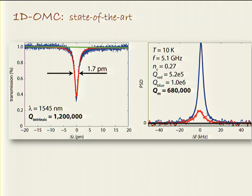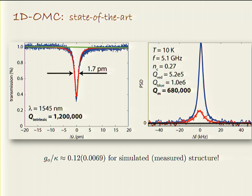The localized optical mode is at around 1.5 micron wavelength and the breathing mode is around 5.7 gigahertz. There are two contributions to radiation pressure coupling: moving boundaries and silicon's stress-optical coefficient. Together these yield an overall optomechanical coupling of roughly 780 kilohertz by design, and experimentally we measure something on the order of a megahertz. We measure an optical Q of about 1.2 million and, at 10 Kelvin, a mechanical Q also on the order of a million — an extremely high frequency-Q product, close to a world record for structures this small.